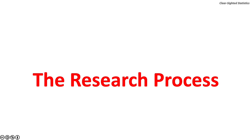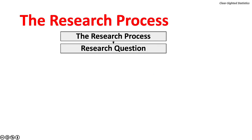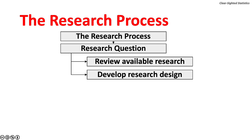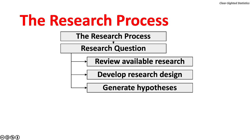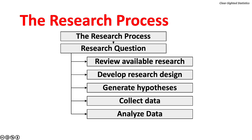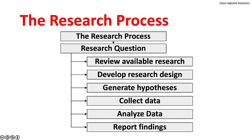Let's turn to the research process. The multi-stage research process begins with the formation of the research question. Once the research question has been formulated, researchers review available research. Among the things considered in the research design are the type of data to be collected, the statistical techniques to be used, and the sample size. The next step is to generate hypotheses when necessary. Then the data are collected, data analysis occurs, and finally the last step is to report the findings.